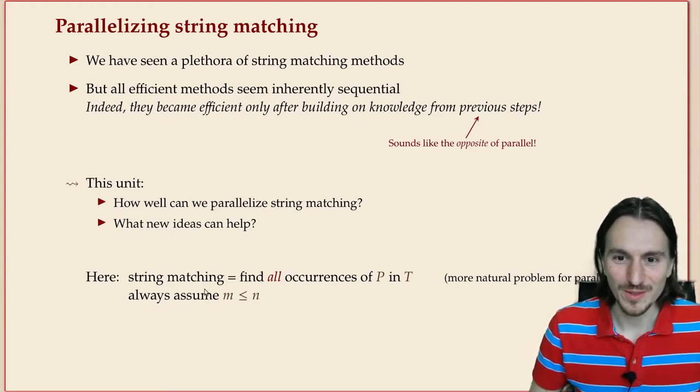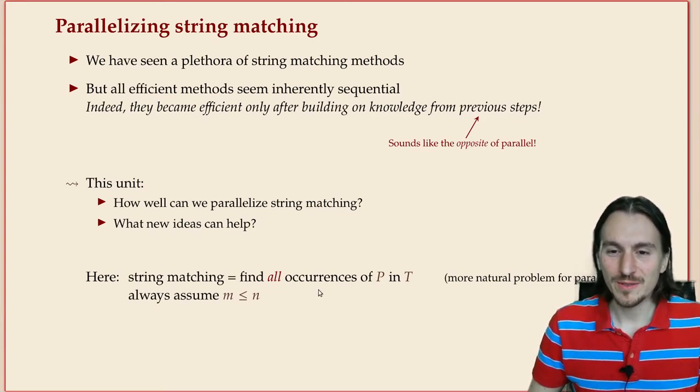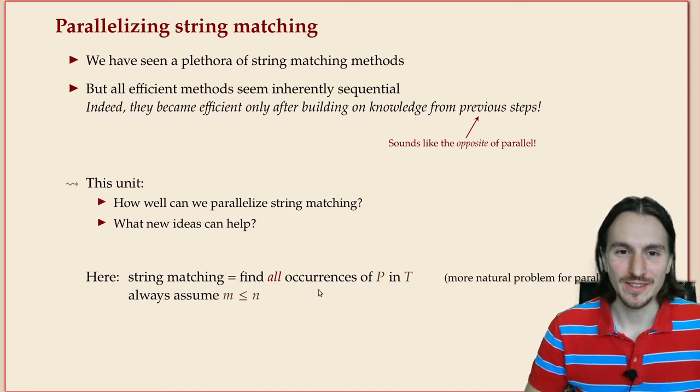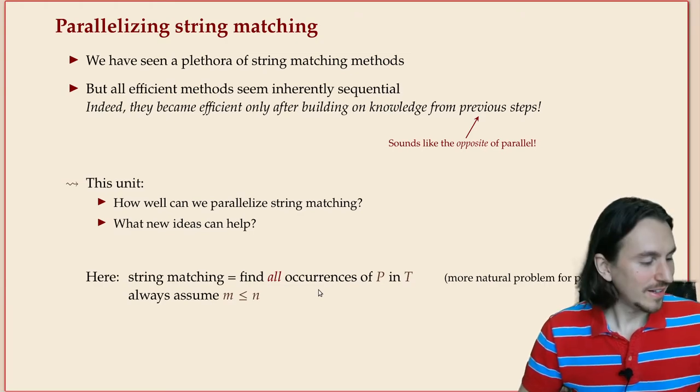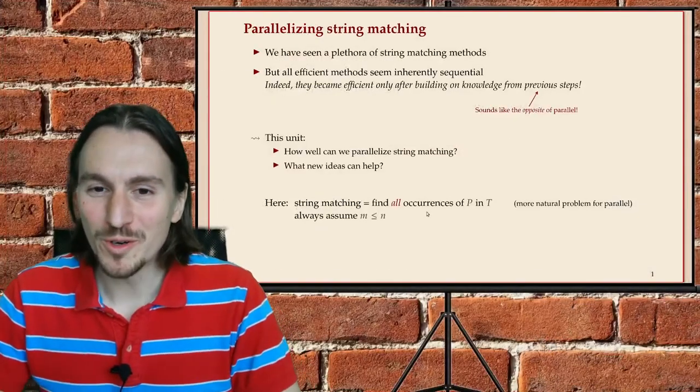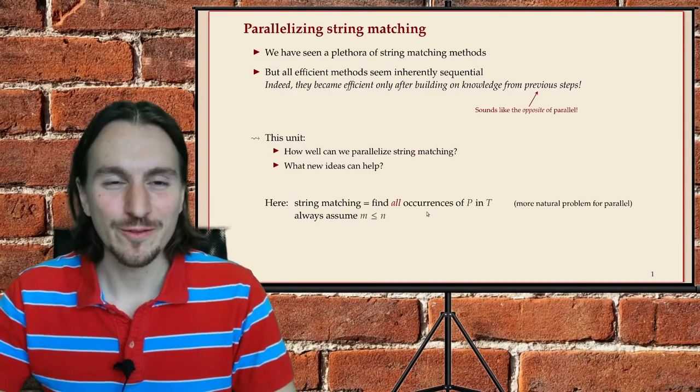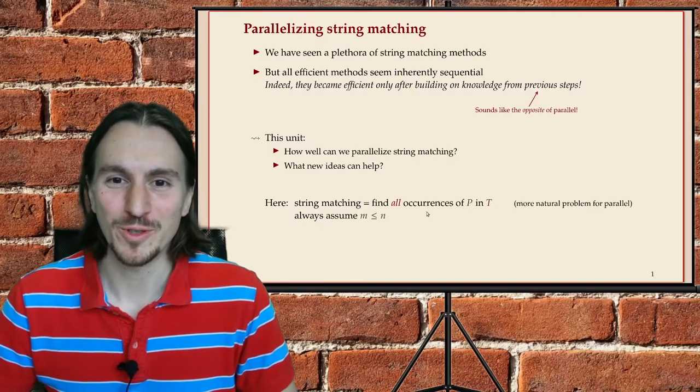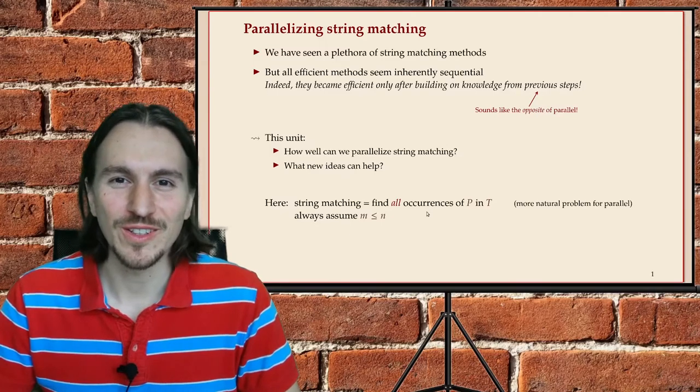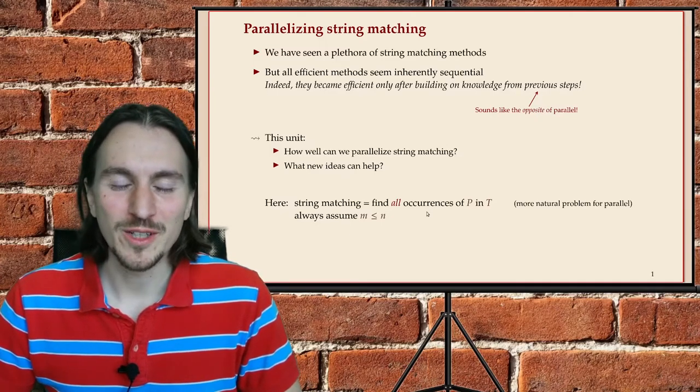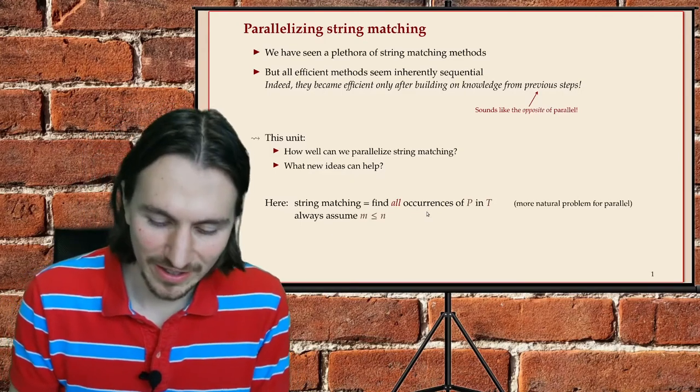What can we do about this? It's more natural here to actually look at the problem of finding all occurrences of a pattern in the text. It's more natural in the parallel setting because finding the first occurrence means you have to communicate much more with the different processing elements, and clearly if you find all occurrences you can easily find the first one afterwards.